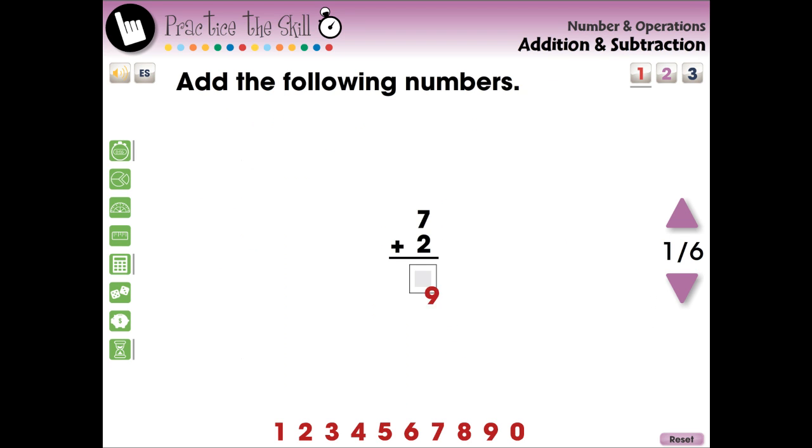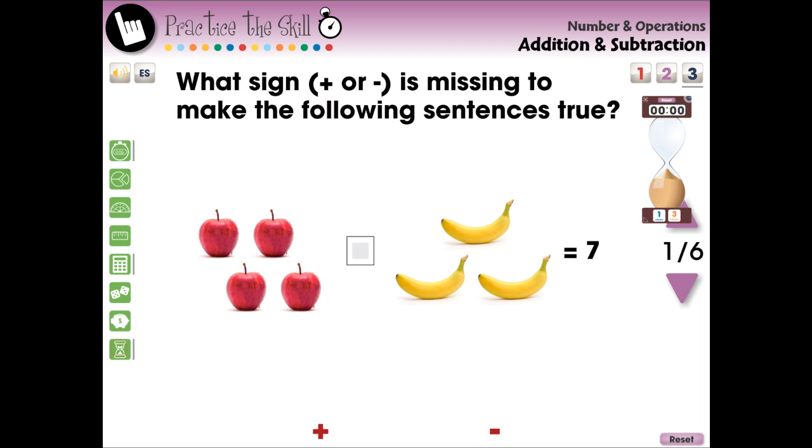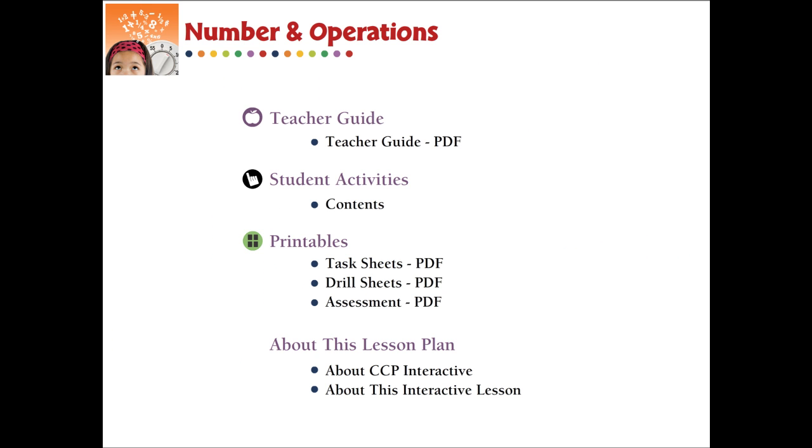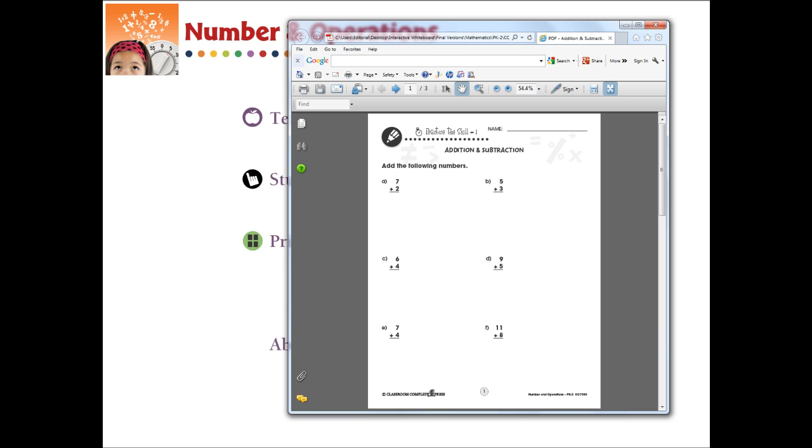The lesson ends with three screen pages of drill activities designed for the teacher to assess if the students have fully learned the concepts and curriculum expectations. The teacher can choose to have timed drills by using the stopwatch or egg timer tools. The questions are delivered in the form of fill-in-the-blank questions. Printable PDF versions of the drill questions are available at the menu screen.